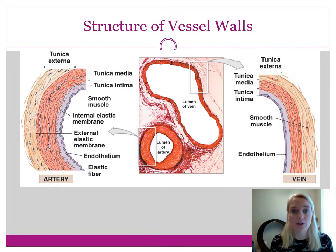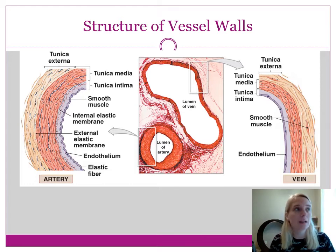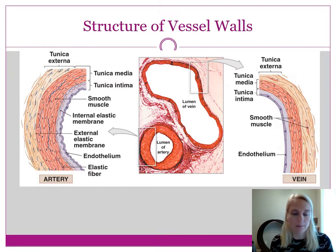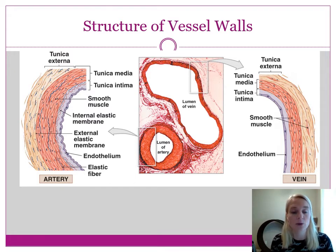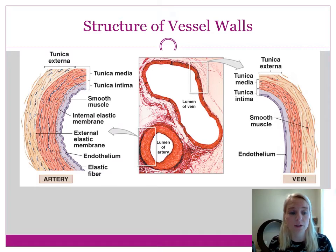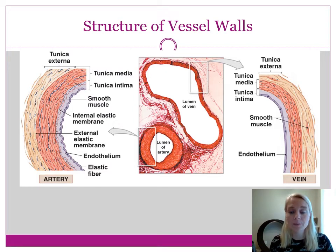The tunica externa is connective tissue — a sheath, similar to what we've seen in other organs like the periosteum or epimysium, or the capsules around organs like the adrenal gland and pancreas. It's dense irregular connective tissue with high concentrations of collagen fibers. The tunica media is smooth muscle. The tunica intima is an epithelial lining over what is probably areolar connective tissue, like lamina propria.